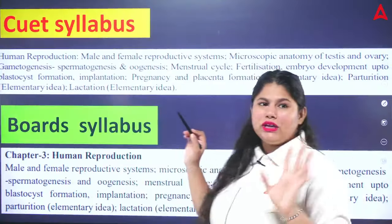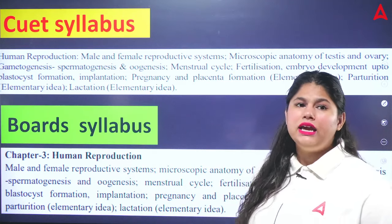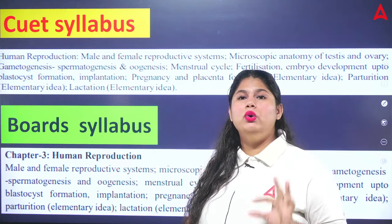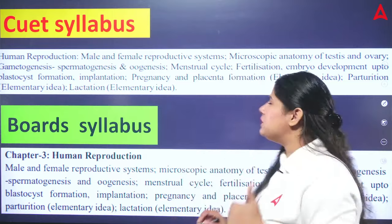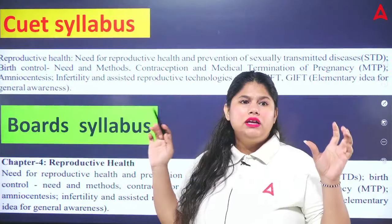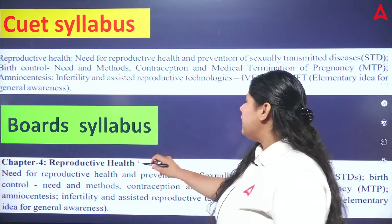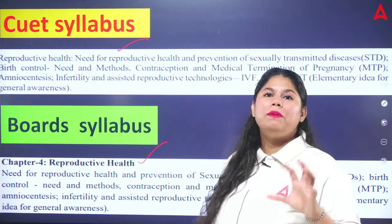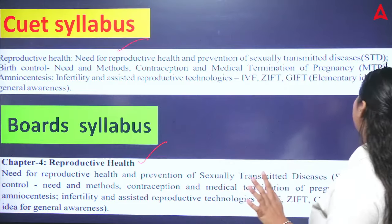Human Reproduction comes next. In CVT and the board, it is the same — not a single topic differs. So our preparation for both is the same here. Then comes Reproductive Health. Not every topic is the same, but the whole chapter is included.